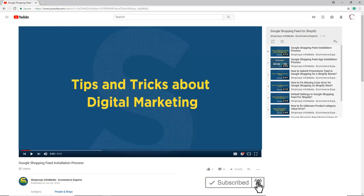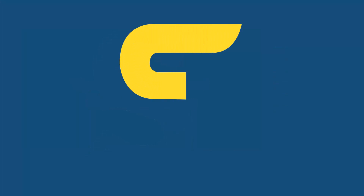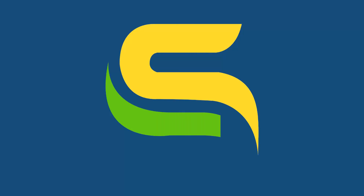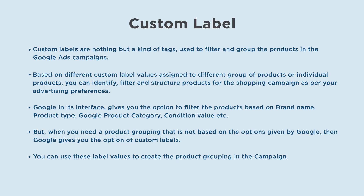Custom labels are nothing but a kind of tags used to filter and group products in Google Ads campaigns based on different custom label values assigned to different groups of products or individual products. You can identify, filter, and structure products for the shopping campaign as per your advertising preferences.